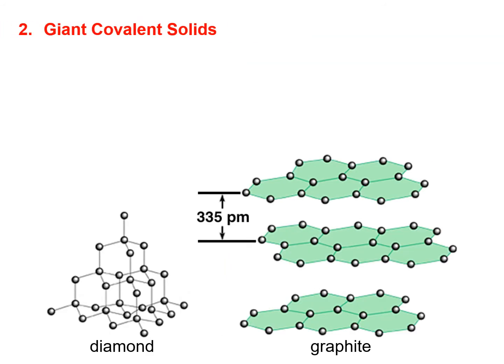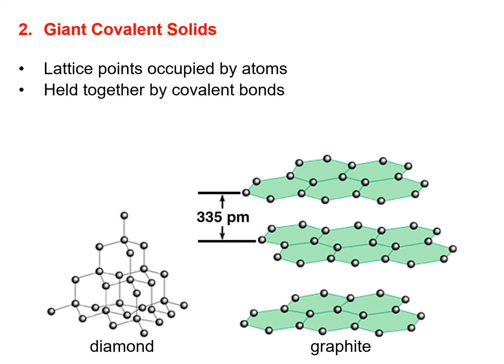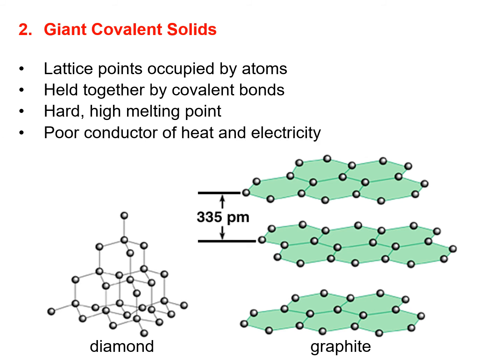Let's talk about giant covalent solids. Why is it called giant? Because it's big, of course. Lattice points for giant covalent solids are occupied by atoms. They are held together by covalent bonds — that's why it's strong. It is hard and has a high melting point. It is a poor conductor of heat and electricity. Look at the carbon atom inside the circle: it is bonded to four other carbon atoms in the form of a tetrahedral, so it's strong.